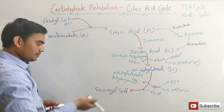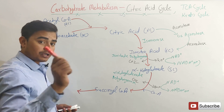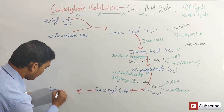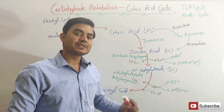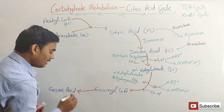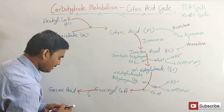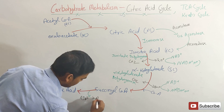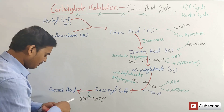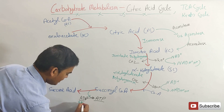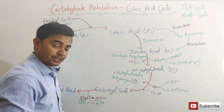Here is a very important point. From succinyl-CoA, the next compound will be succinic acid. This is where substrate-level phosphorylation takes place in the Krebs cycle — a question asked very frequently. Here, one phosphate group is directly transferred and ADP is converted to ATP — or in some books it is GTP, so GDP forms GTP. This substrate-level phosphorylation is very important.